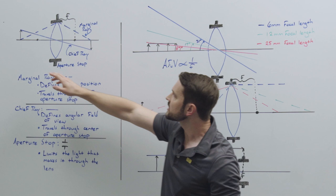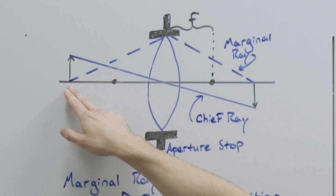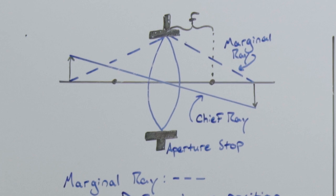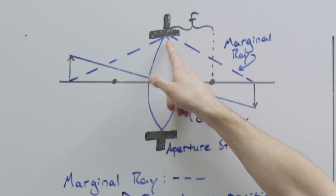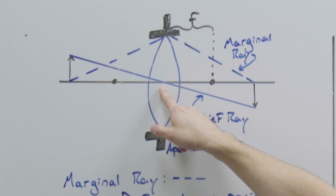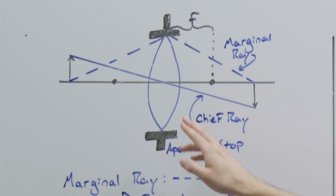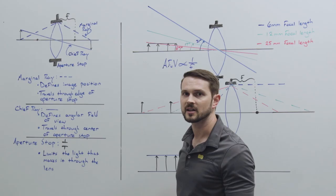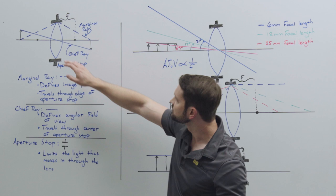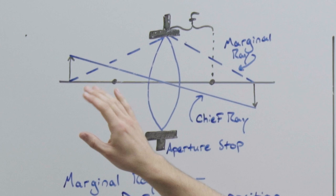What are these different types of rays? The marginal ray, drawn as a dashed line, starts at the base of the object, goes up to the edge of the aperture stop, and then comes back down to cross the optical axis. A marginal ray starts at the base of the object, defines where our image is formed, and always hits the edge of the aperture stop. The chief ray goes through the center of the aperture stop and defines our angular field of view — driven by both the size of the sensor and the focal length.